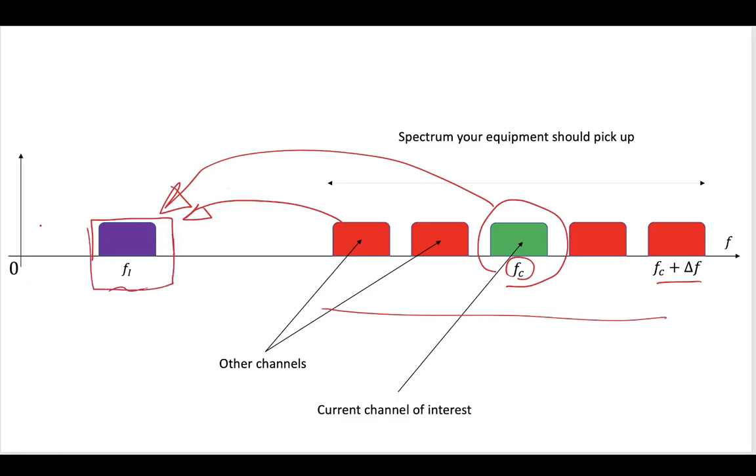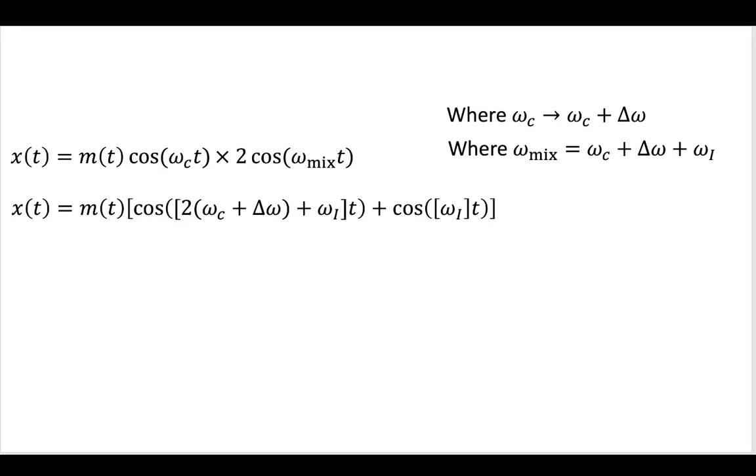We call it intermediate because it's not quite baseband. It's not at our baseband, but it's definitely not as high as our carrier frequency is. So when we do this...